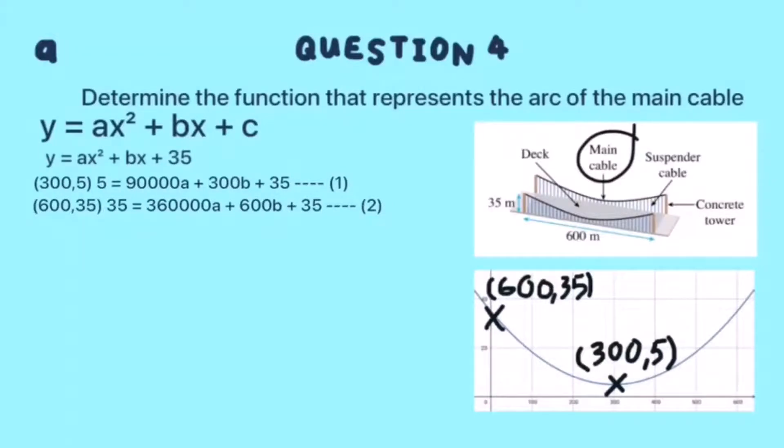After that, we will use equations 1 and 2 to find the value of a and b. We will use the elimination method. First, take equation 1 and multiply by 2. We will get 10 = 180000a + 600b + 70.